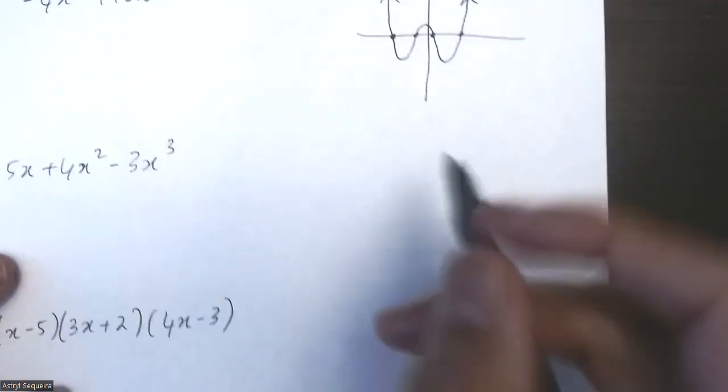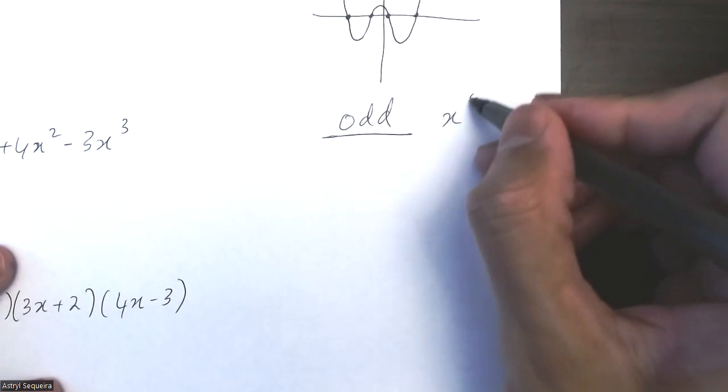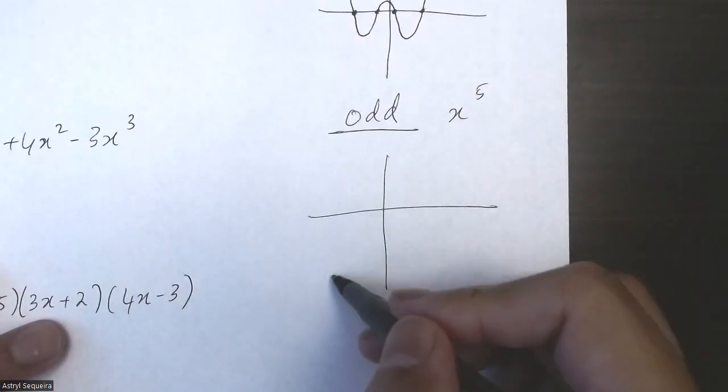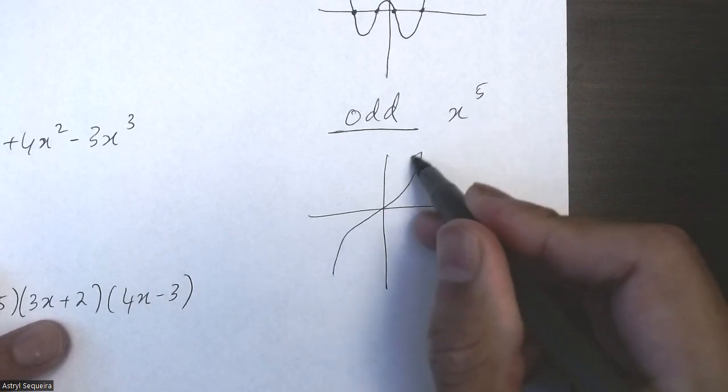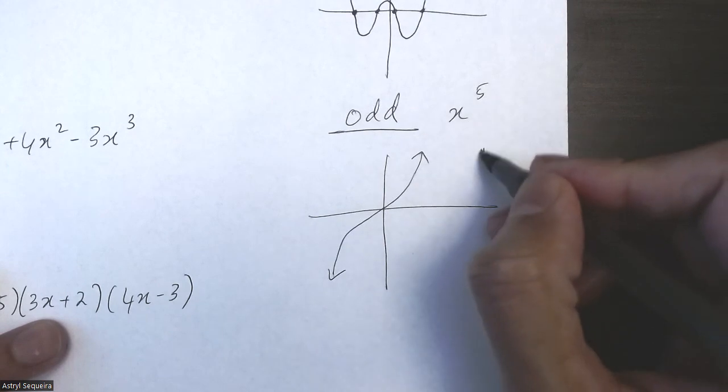Let's talk about odd functions. I'll talk about x^5 or an odd function. So we know that x^5 can look like this, and this is the minimum number of zeros, which is one zero.